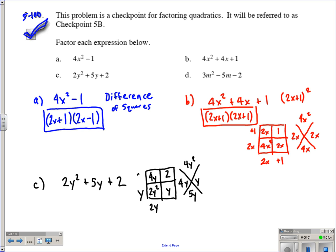2y times 2 gives us 4y. Then y times 1 gives us y, and 1 times 2 gives us 2. So we know we're good to go from there. So we should end up with 2y plus 1 as one of our binomials, and then y plus 2 as the other. That is letter c.